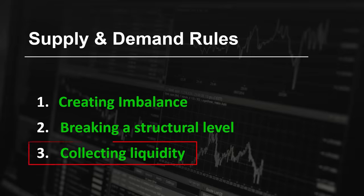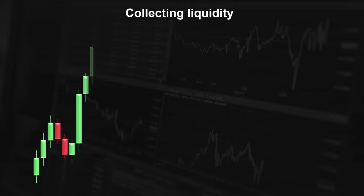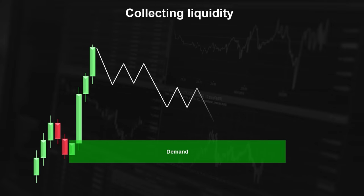The third, or plus-one, criterion is collecting the liquidity. This is considered a plus-one criterion because it is not necessary to create or sweep liquidity in order to have a valid zone. However, it serves as strong confirmation. So the first and second rules — creating imbalance and breaking the structure — must happen, and the third criterion — liquidity sweep — is just a confirmation.